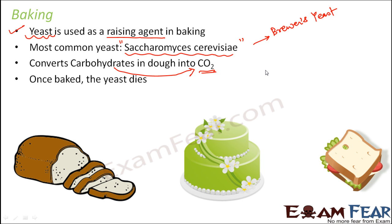Now, how exactly does the conversion of carbohydrates to carbon dioxide take place? During bread making, cake making — they all follow the same concept. Initially, aerobic respiration takes place, meaning respiration in the presence of oxygen. In aerobic respiration, sugar — the food taken by the organism — is oxidized in the presence of oxygen to form energy, carbon dioxide, and water. Initially, aerobic respiration takes place because oxygen is present in the environment.